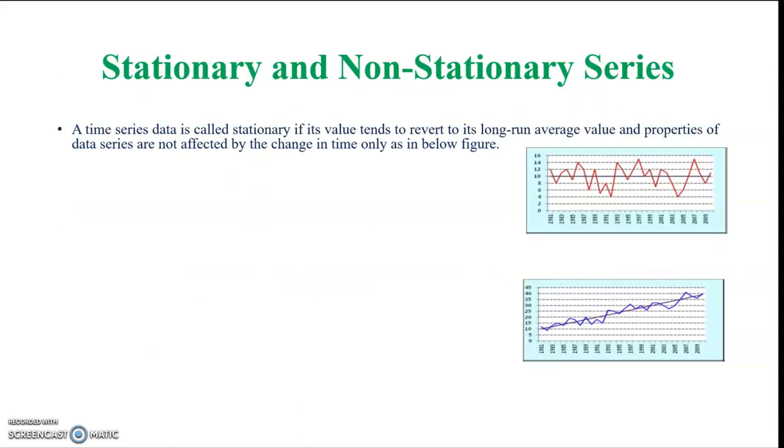Some time series may be stationary like in the upper figure. So a time series data is called stationary if its values tend to revert to its long run average value and properties of data series are not affected by the change in time only as in the figure below.